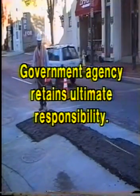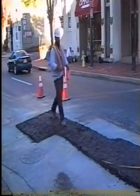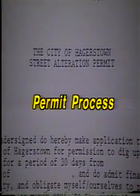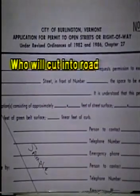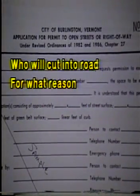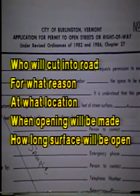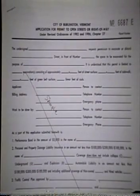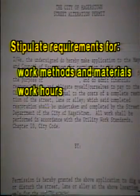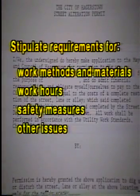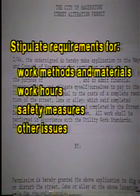Regardless of who actually does the work, local agencies can use several means to ensure that utility cuts are properly made and restored. First, a permit process makes it clear who is in charge of the local roads and streets. Permit information tells an agency who will cut into a road or street, for what reason, at what location, when the opening will be made, and how long the surface will be open. The permit form itself may be simple or comprehensive, depending on the agency structure. Permits may stipulate requirements for work methods and materials, work hours, safety measures, and other issues. They bind the utility to comply with conditions that the agency deems important.